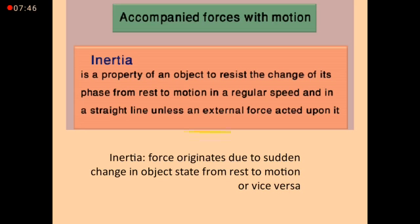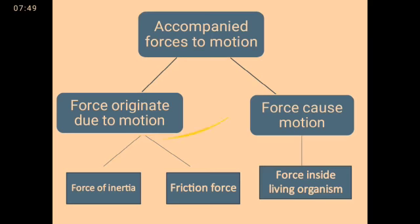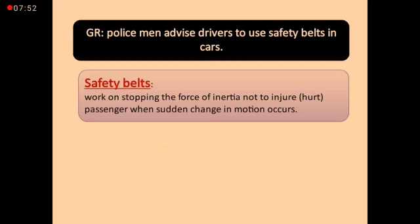In this part, we have important questions about inertia. Give reason: police advise drivers to use a safety belt in a car. What is meant by a safety belt? The safety belt works to stop the action of the inertia force, so as not to injure the passenger when there is a sudden change in motion. Answer: to stop the force of inertia and not harm the passenger.